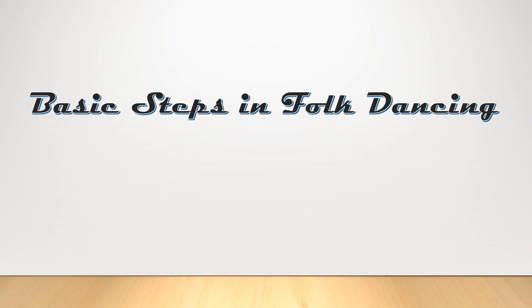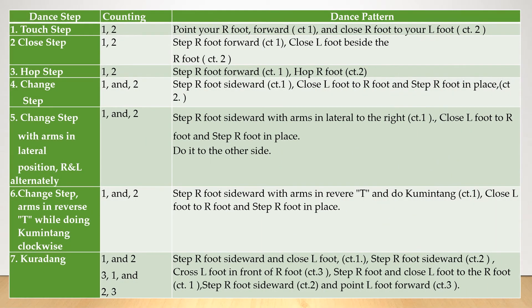Basic steps in folk dancing. Touch step, counting one and two: point your right foot forward, count one; and close right foot to your left foot, count two. Close step, one and two: step right foot forward, count one; close left foot beside the right foot, count two.